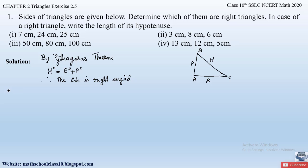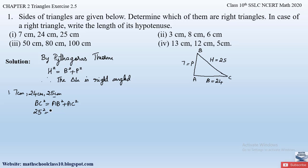The sides of the triangle in part 1 are 7 cm, 24 cm, and 25 cm. The longest side is 25 cm, so let the hypotenuse be 25, base be 24, and perpendicular be 7 cm. Substituting in the Pythagorean formula: BC² = AB² + AC², that is 25² = 7² + 24².